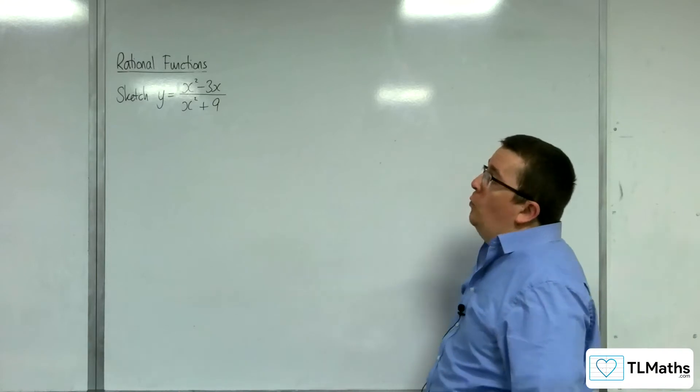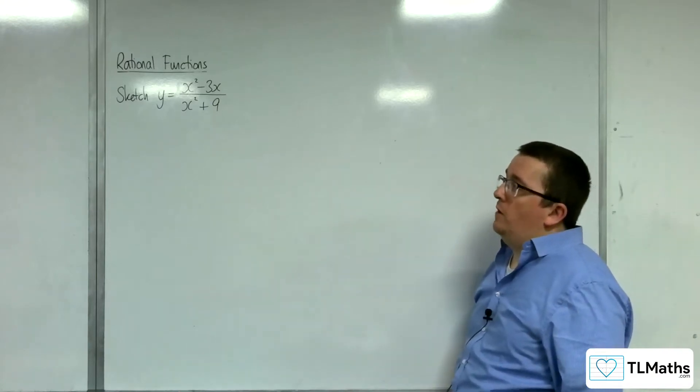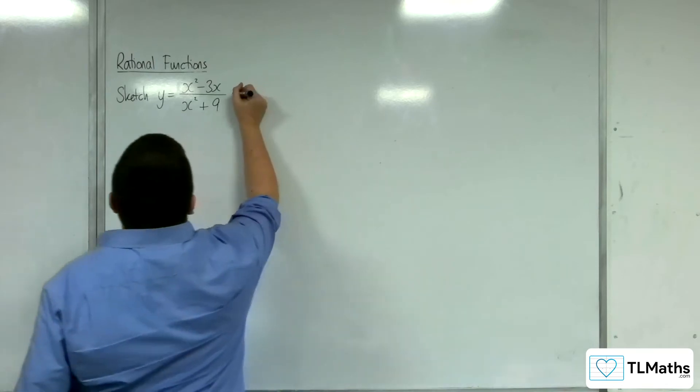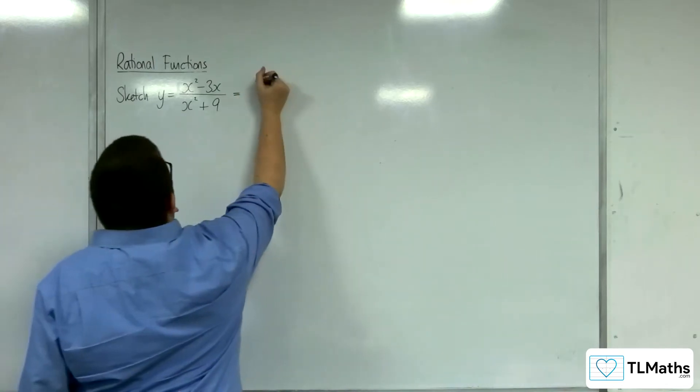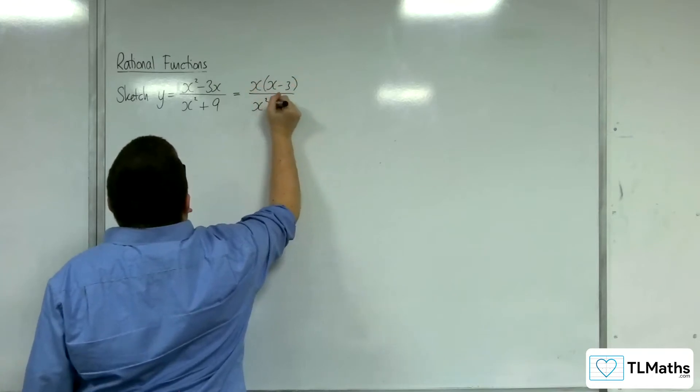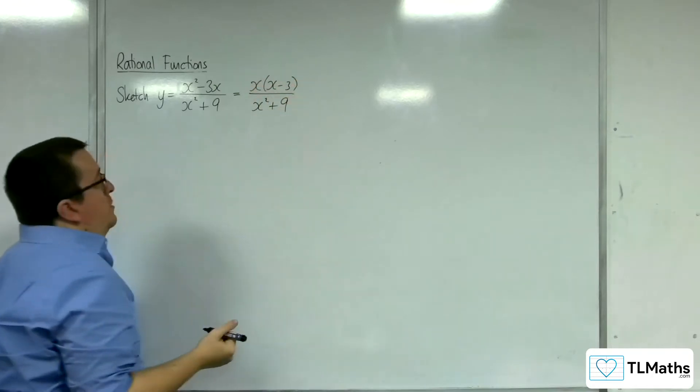In this video we're going to be sketching y = x² - 3x over x² + 9. So first thing to do, can you factorize the numerator and denominator? Well the numerator factorizes to x(x - 3), but unfortunately the denominator does not factorize.